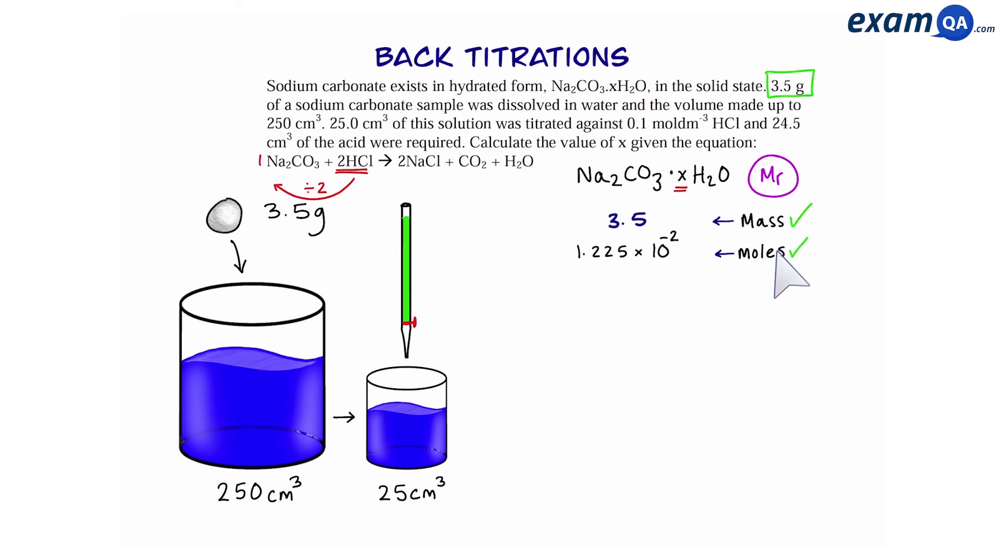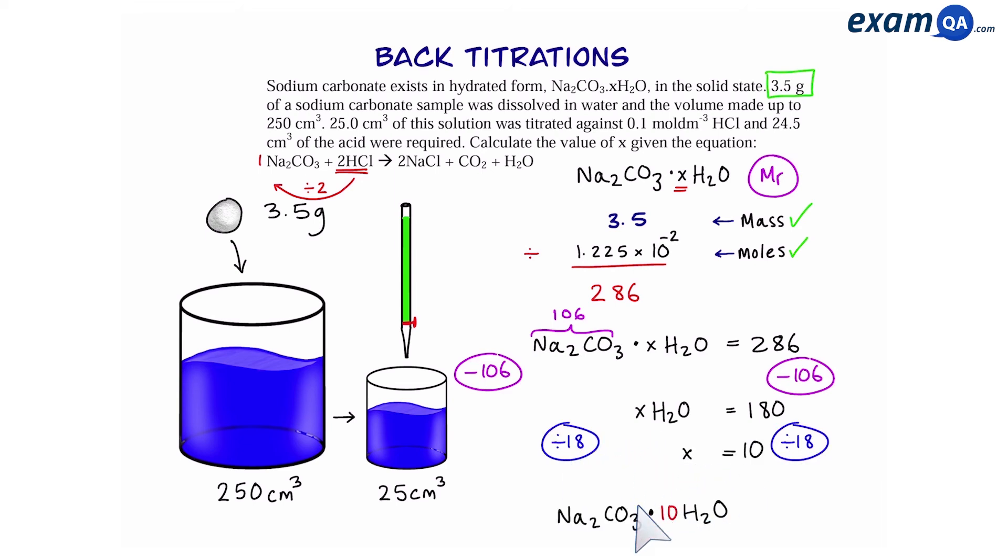Since we have the mass and the moles, we can then divide them to work out the MR, which is 286. Next, we can use this equation to start to work out the value of x. Again, just like before, take away 106 from both sides. That leaves you with x times water is equal to 180. Then divide by 18, and that gives you x equals 10. And this is the final formula.